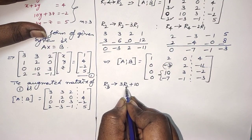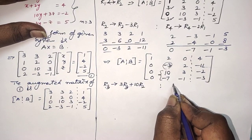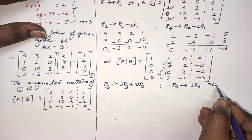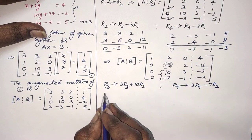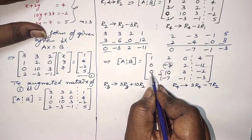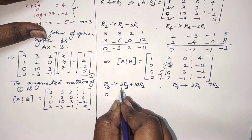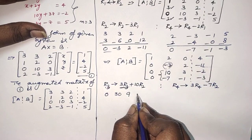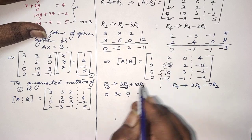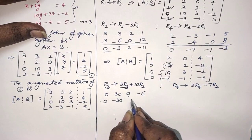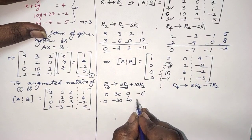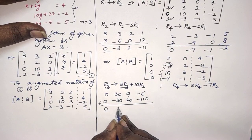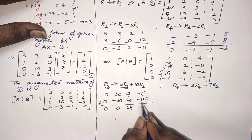This operation applies to R3, not R2. And for R4: R4 → 3·R4 minus 7·R2. Computing 3·R3: 0, 30, 9, minus 6. Then 10·R2: 0, minus 30, 20, minus 110. Adding: 0+0=0, 30−30=0, 9+20=29, −6−110=−116.